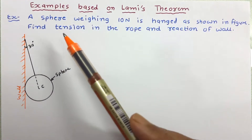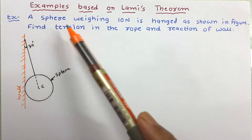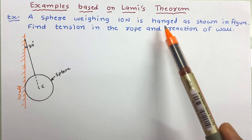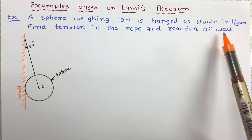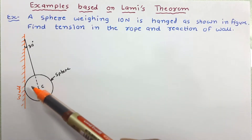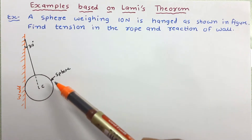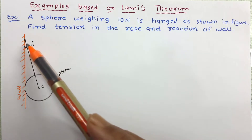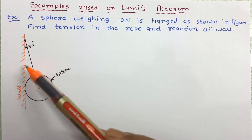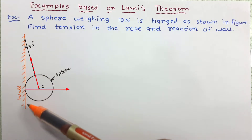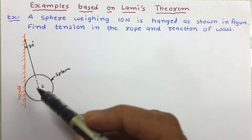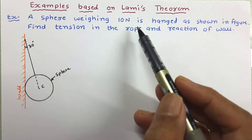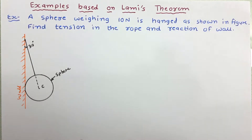This problem is given. We will read the data first. A sphere weighing 10 Newton is hanged as shown in figure. Find tension in the rope and reaction of the ball. In the figure, we can see a sphere which is hanged with a rope and it is rested on the wall.